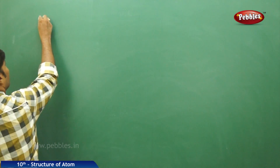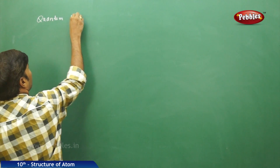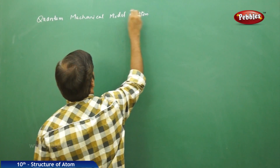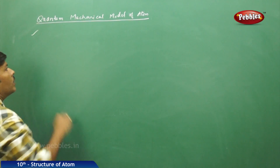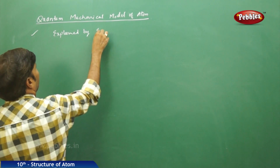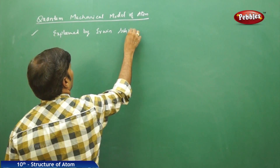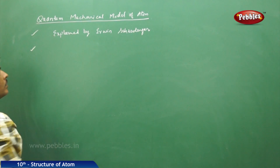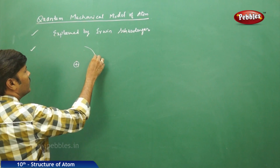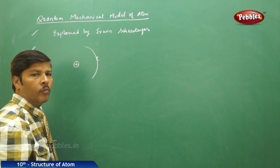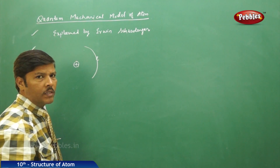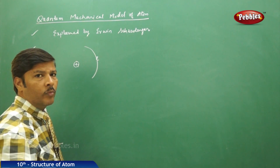The next topic under our discussion is the Quantum Mechanical Model of the Atom. This model was explained by Erwin Schrödinger. According to Erwin Schrödinger, when we consider the nucleus of an atom with its energy levels and an electron, this moving electron revolves around the positively charged nucleus in continuous revolution. Because the electron is the smallest particle of matter and very small in size.